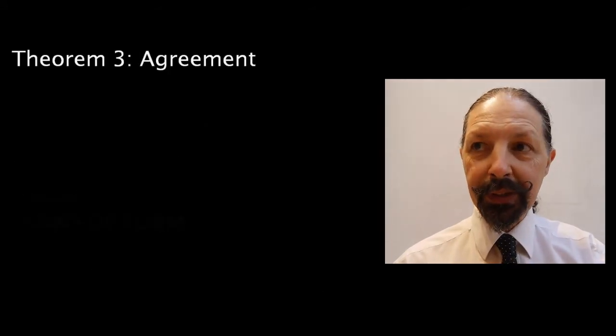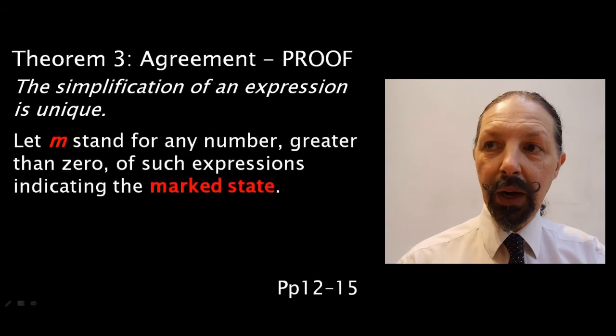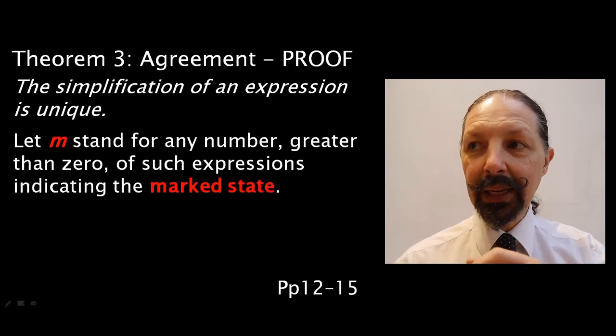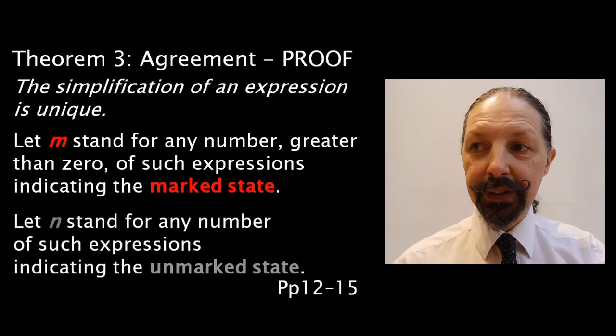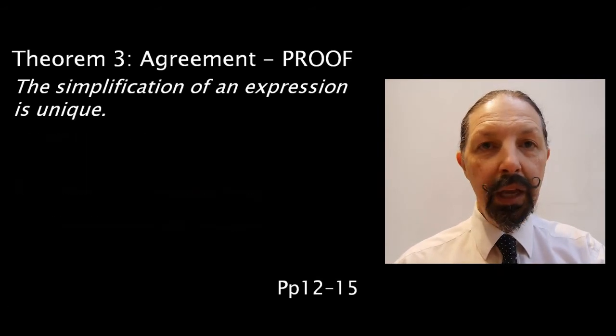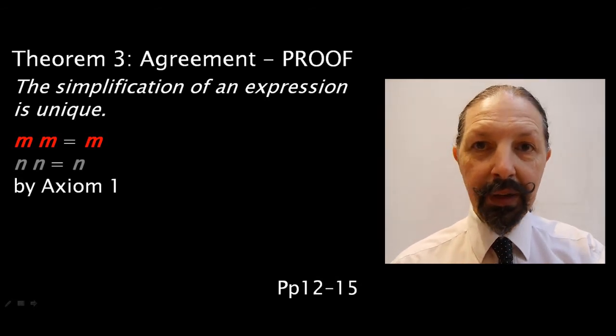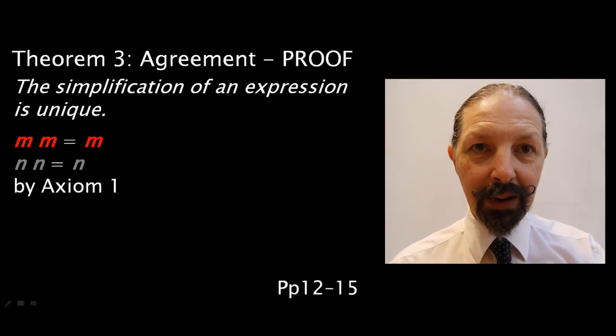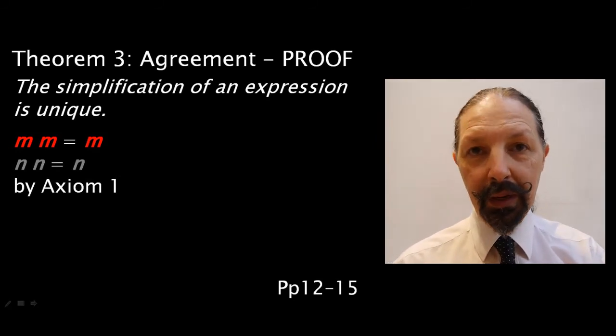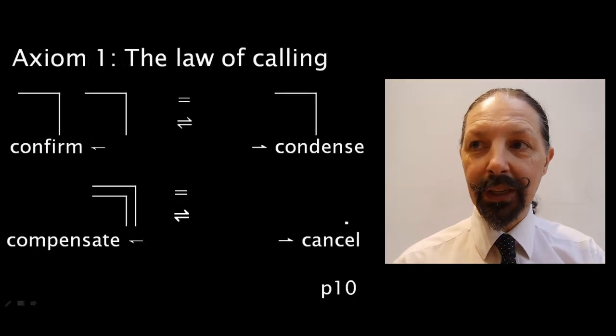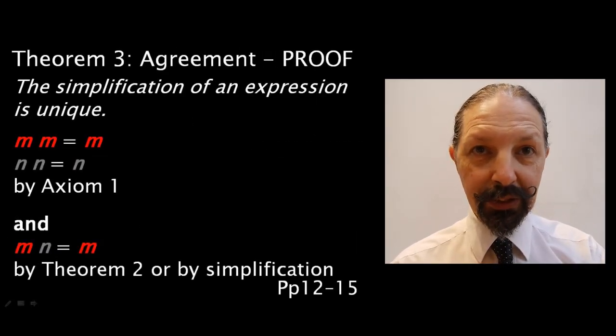Theorem 3 is about agreement. And it states that the simplification of an expression is unique. How do we prove that? Well, we're going to use the letter M to stand for any number greater than 0 of expressions indicating the marked state. And M further the same, relating to the unmarked state. If we put a number of expressions that are marked adjacent to each other, they condense and reduce to a marked state. Similarly, it doesn't matter how many expressions you have adjacent to each other that are unmarked. They all cancel out to the unmarked state. And that's by axiom 1. Let's remind ourselves of axiom 1, the law of Cori. That's what it says.